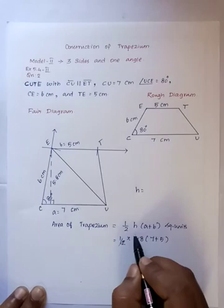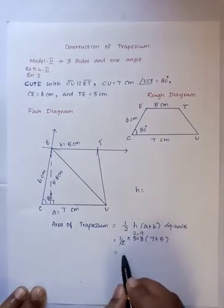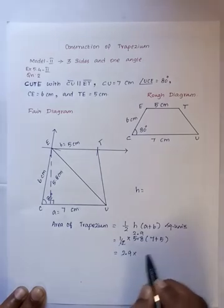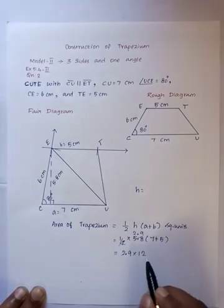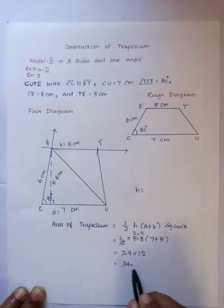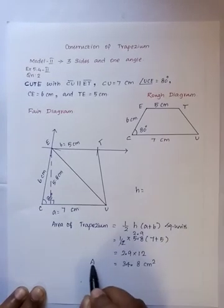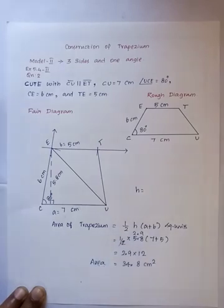So two cancels, two twos are four, remaining one, nine twos are eighteen. So 2.9 into 7 plus 5 is 12. If we multiply this we will get 34.8 cm square. So area of trapezium equal to 34.8 cm square.